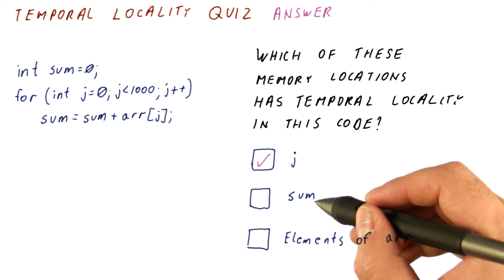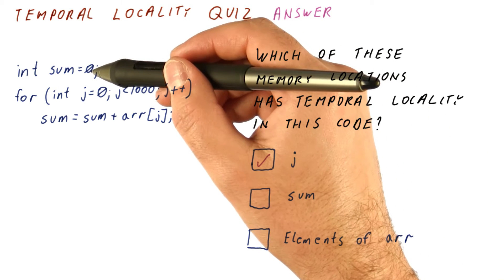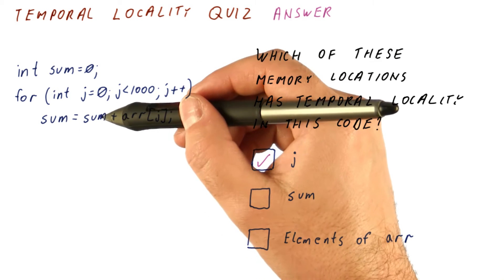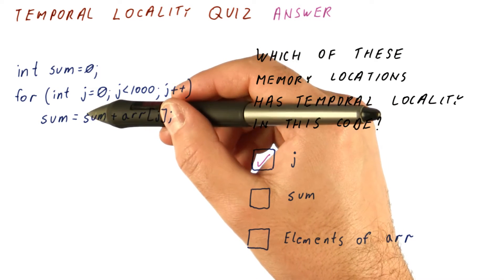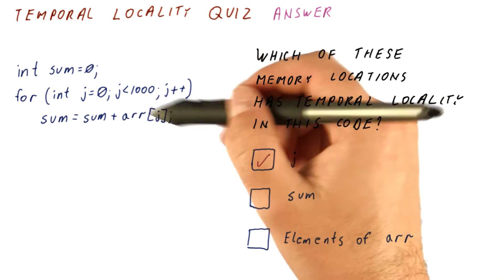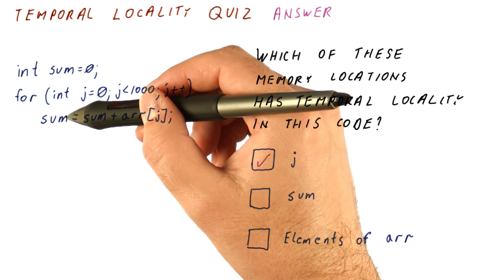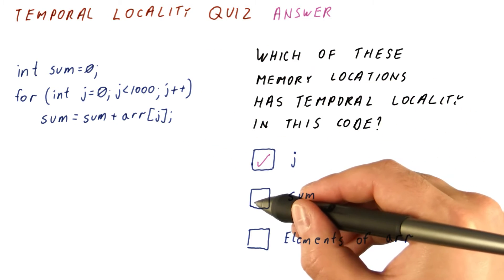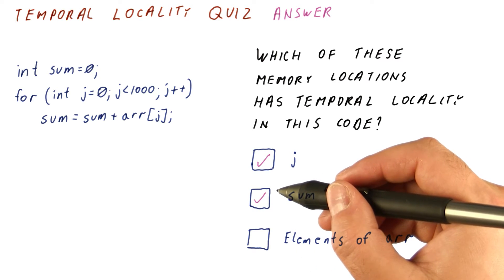The variable sum, same thing. It is being initialized, and then in every iteration of this loop, it is going to be read so that we can add something to it, and then written back to memory. So this definitely also has temporal locality.